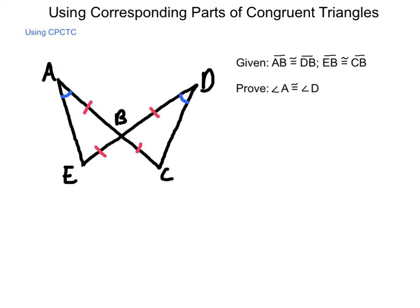So we need to establish that these triangles are congruent to begin with. So one thing that we do know that we can add into this is that angle ABE is congruent to angle DBC. And the reason for that is that they are vertical angles.